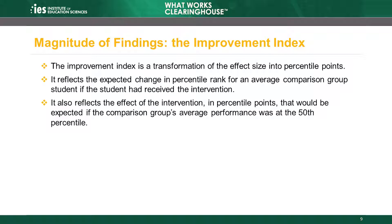The WWC also reports a third measure of the magnitude of an impact called the Improvement Index. Some WWC products report the Improvement Index in addition to an effect size — for example, it is reported in intervention reports but not practice guides. The Improvement Index is a transformation of the effect size that represents the expected change in percentile rank for an average comparison group student if that student had received the intervention. It measures the effect in percentile points if the comparison group's average performance was at the 50th percentile.